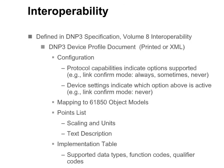Interoperability requirements are defined in Volume 8 of the D&P3 specification. Each device should have an associated D&P3 device profile document. This document has typically been provided in a printed format; however, going forward, devices should supply the document using the defined XML schema. An XSLT document is available to provide an HTML version of the device profile that is more human-readable and can be printed. The XML-based device profile document facilitates mapping the device configuration to IEC-61850 object models as well.